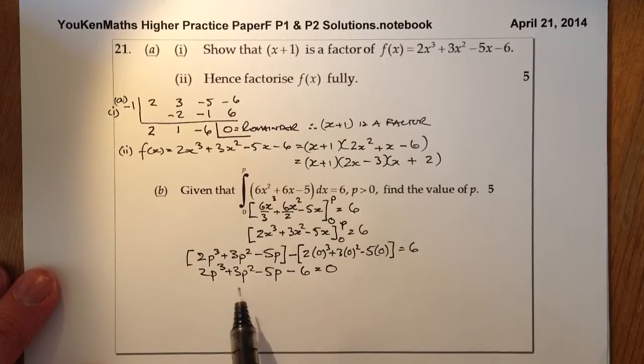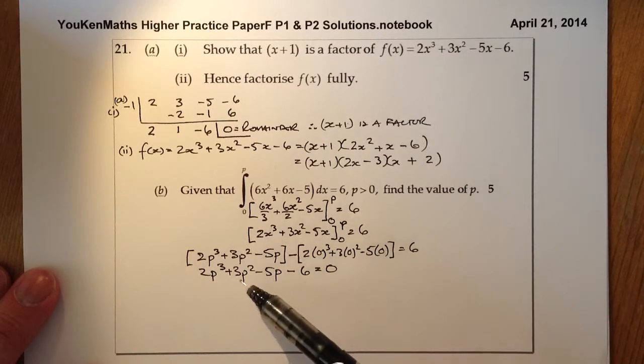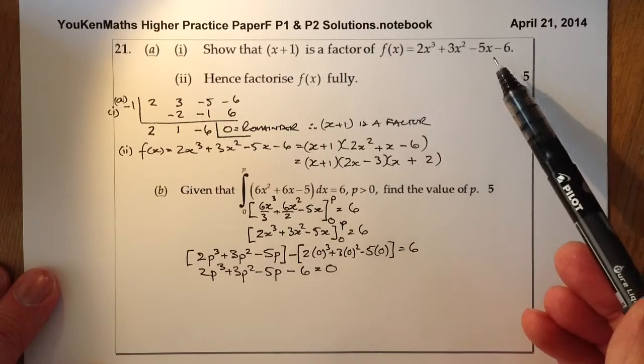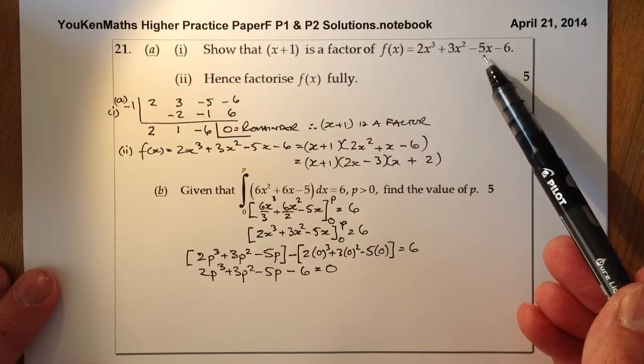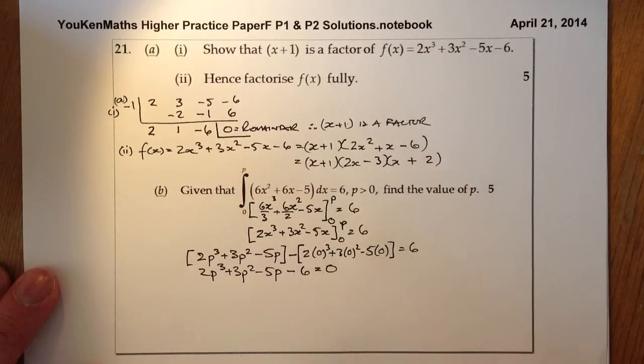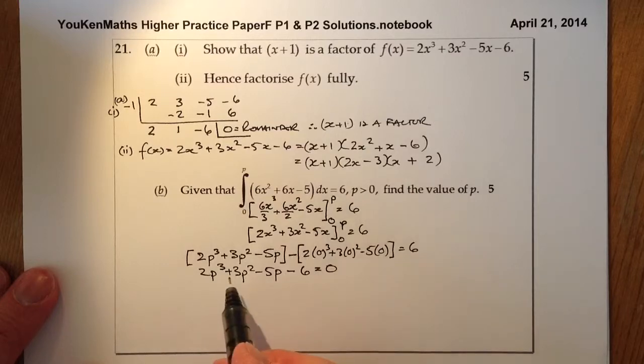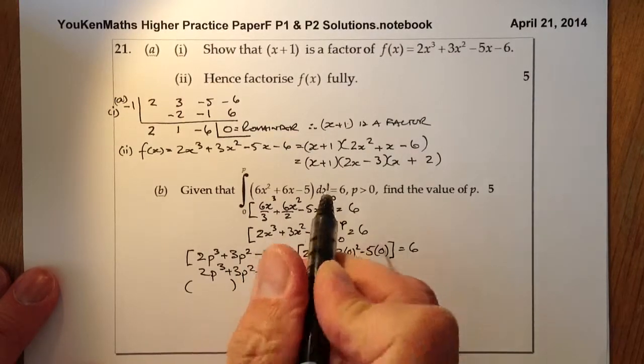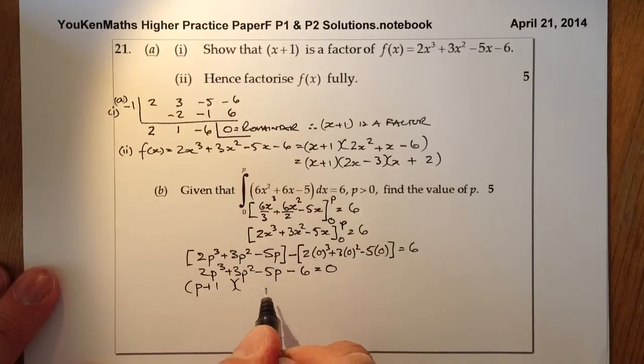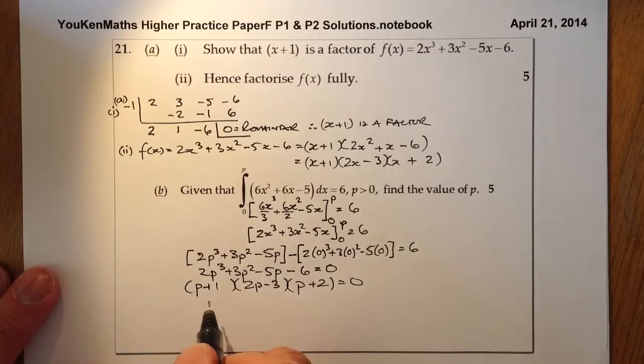I'll have to factorise that. But if I look up at part A, this function is the exact same as the function I started with, and I've already factorised it, so I can take the factorised elements from here. Using p instead of x: (p + 1)(2p - 3)(p + 2) = 0.